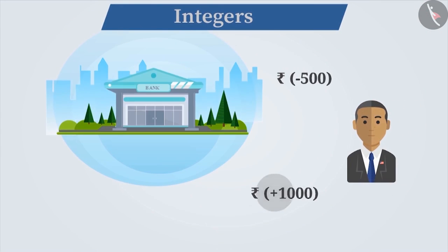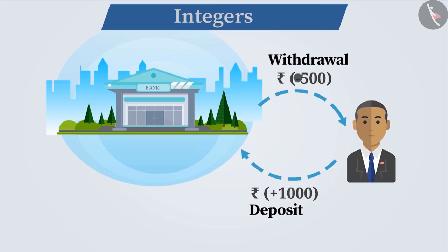At times, we place a plus sign or a minus sign in front of a number. They are commonly used to express opposite situations. For example, the amount deposited in the bank account is expressed with a plus symbol and the amount withdrawn from the bank account is expressed with a minus symbol.